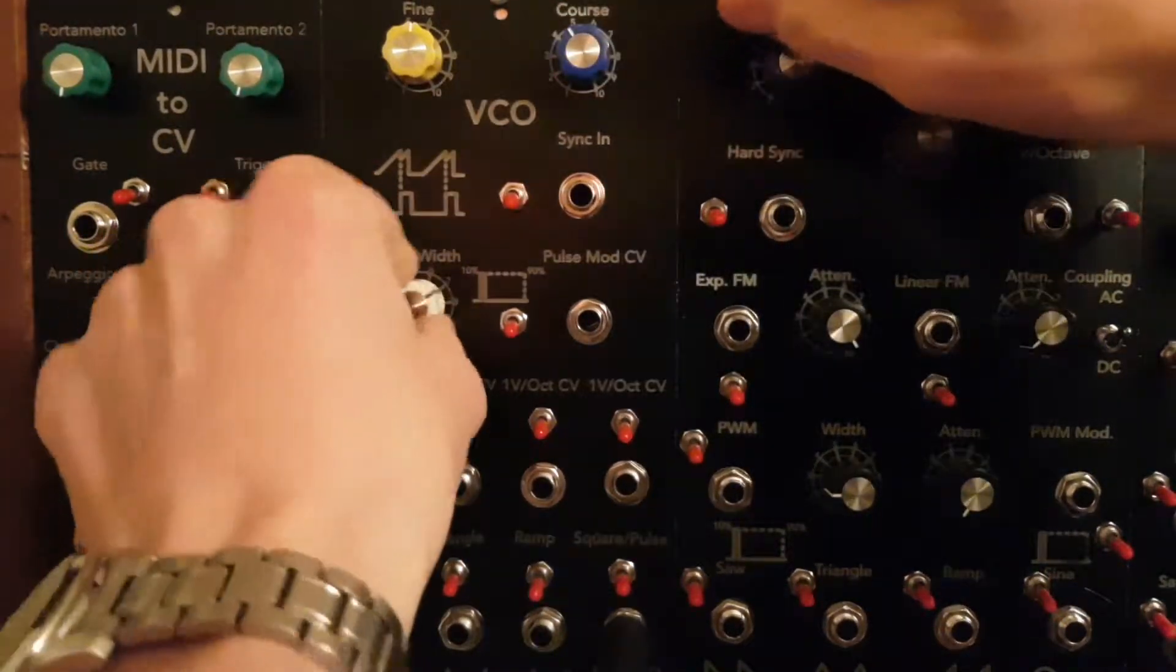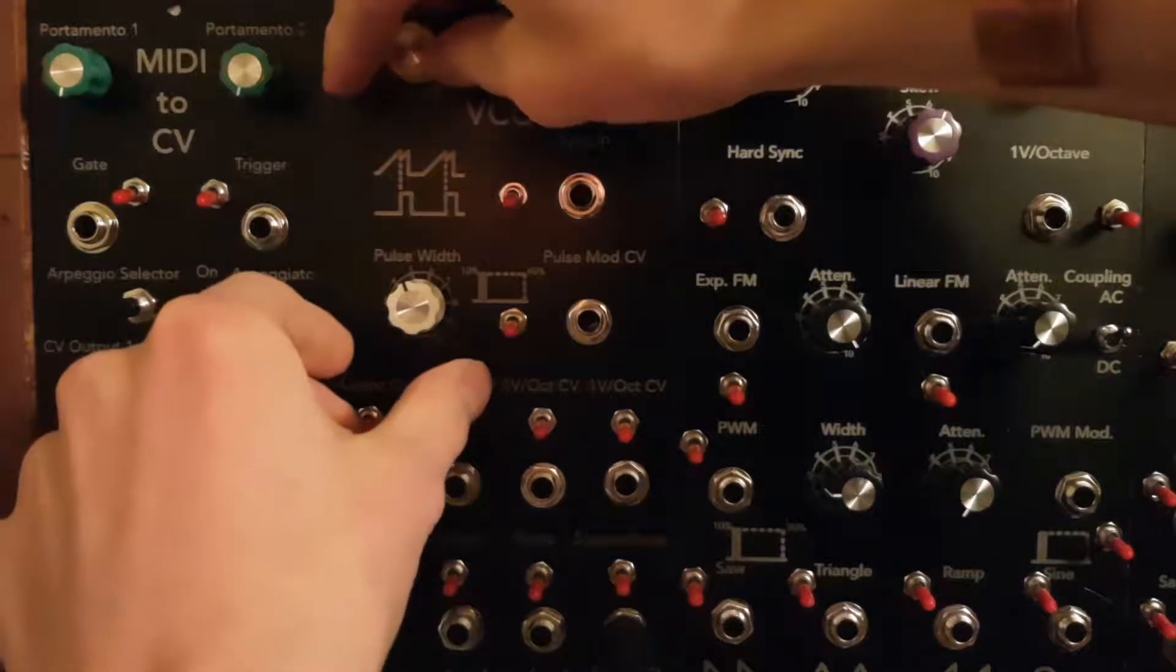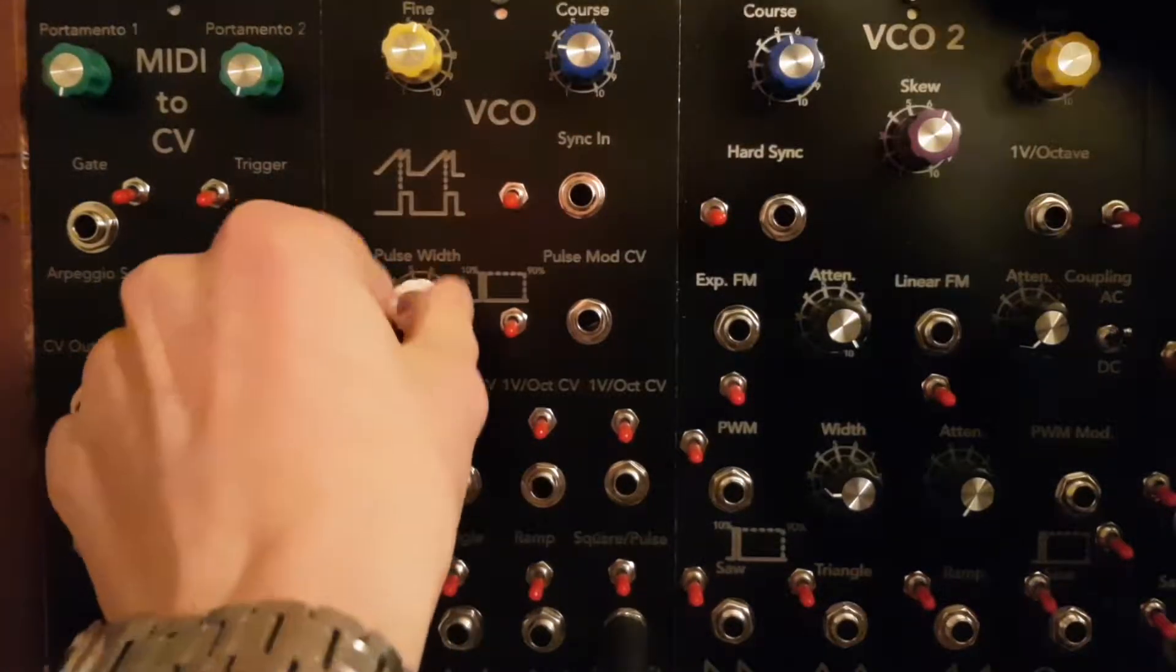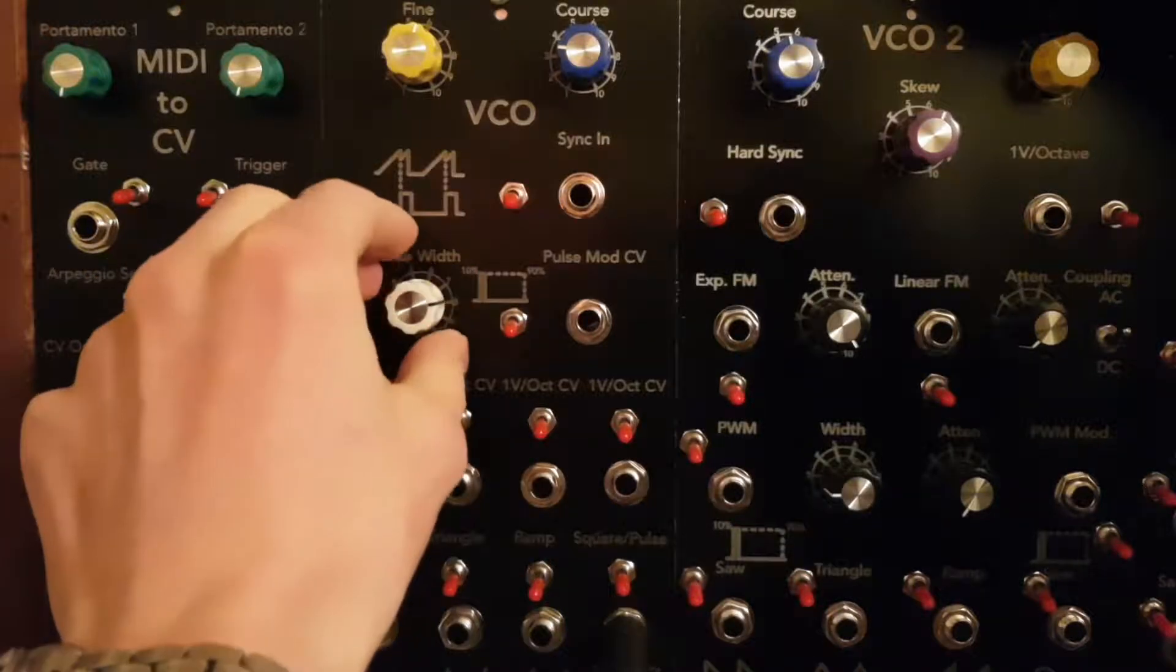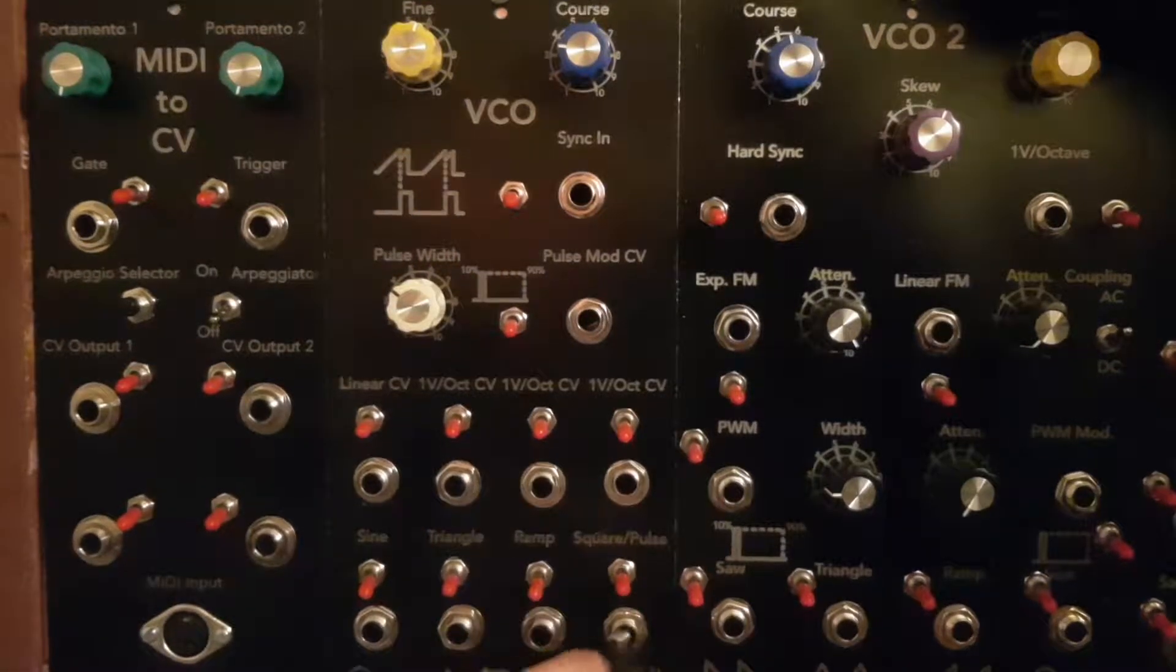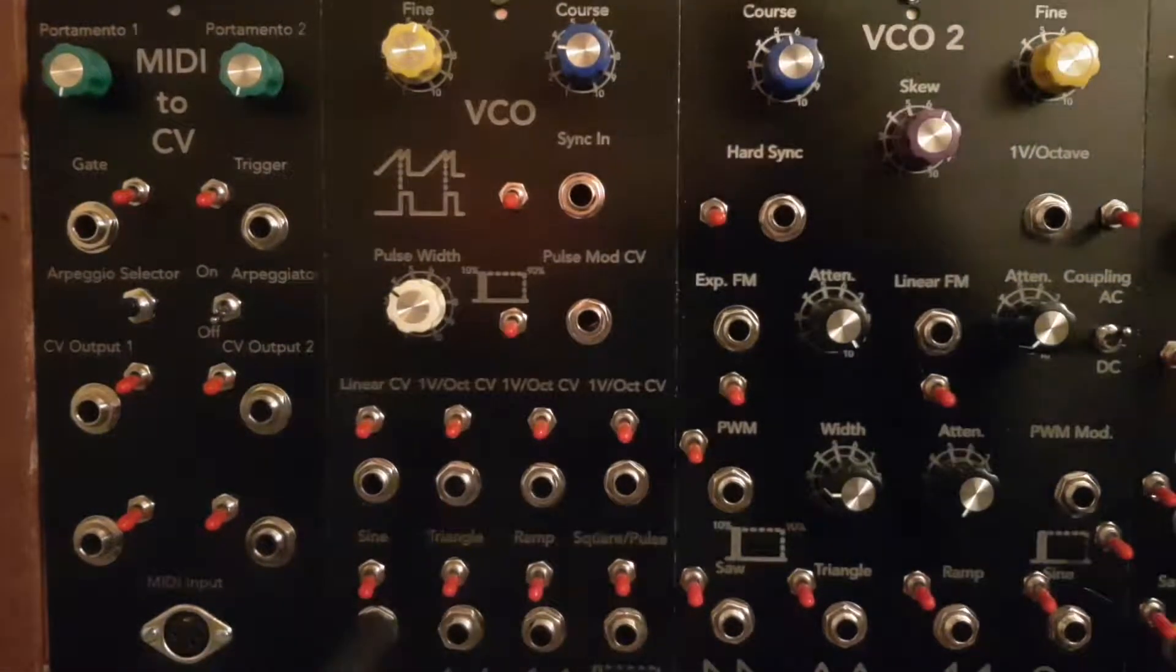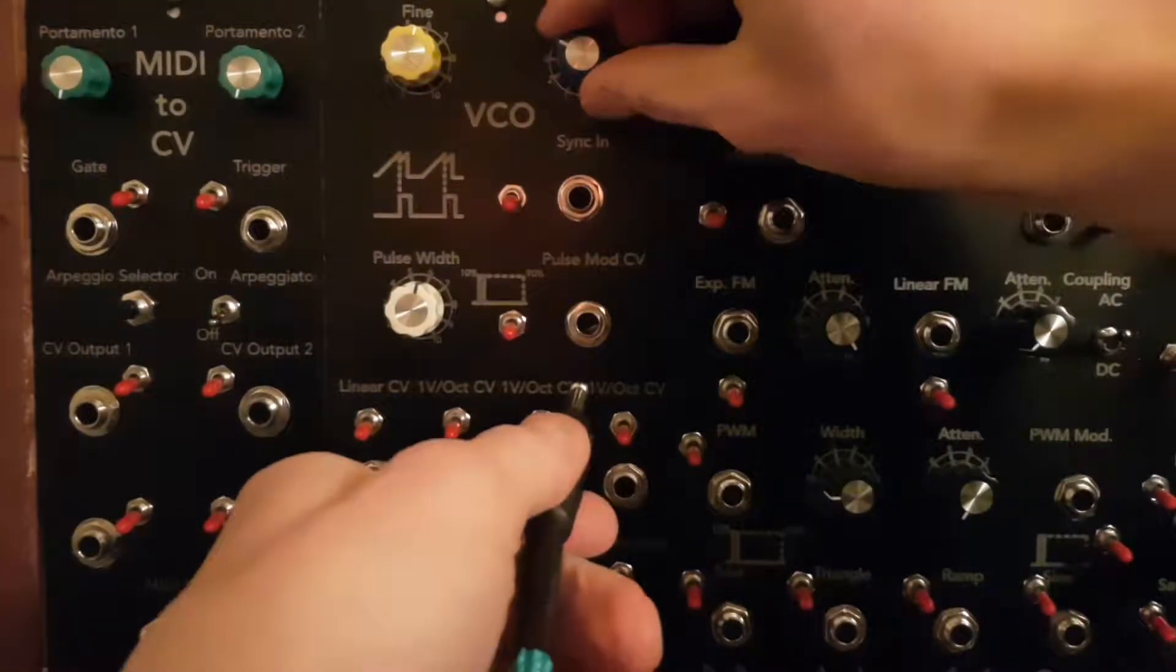Going through the different waveforms here, on the square wave output there is a pulse width setting so you can set how wide the square wave is, like the duty cycle.